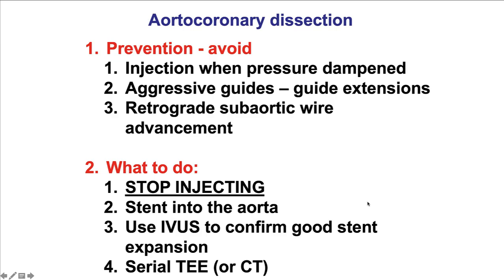In summary, the key way for preventing aortocoronary dissections is to not inject if there's pressure dampening. If it occurs, the most important thing is to stop injecting, then place a stent, use IVUS to confirm the stent is doing well, and then use TEE or CT to serially monitor the aortocoronary dissection size.